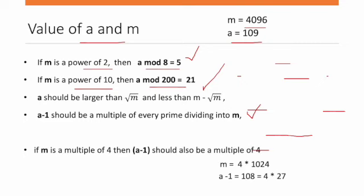If m is a multiple of 4, yes, 4096 is a multiple of 4 (4 × 1024), so a minus 1 should also be a multiple of 4. And a minus 1 = 108 is also a multiple of 4.